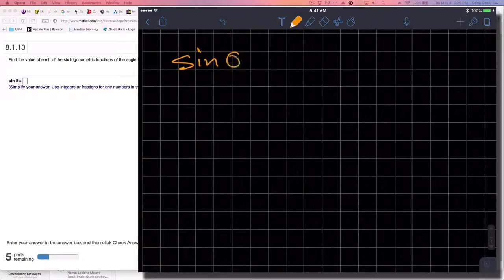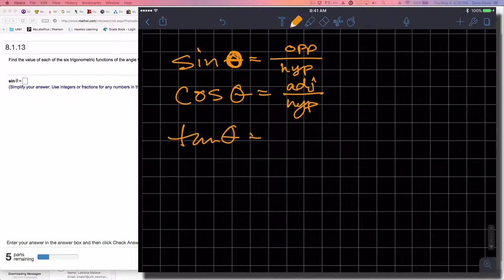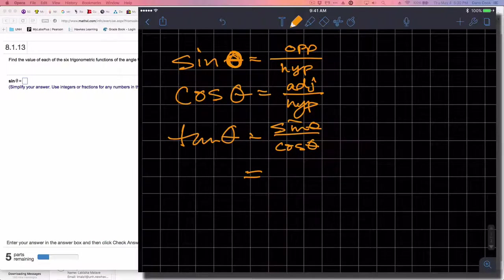If we're looking to determine the six trigonometric functions—correction, the six trigonometric ratios—each trig ratio is a ratio of two sides of the triangle. Sine is the length of the opposite leg divided by the length of the hypotenuse. Cosine is the length of the adjacent leg divided by the length of the hypotenuse. Tangent is also thought of as sine over cosine, or the length of the opposite leg divided by the length of the adjacent leg.